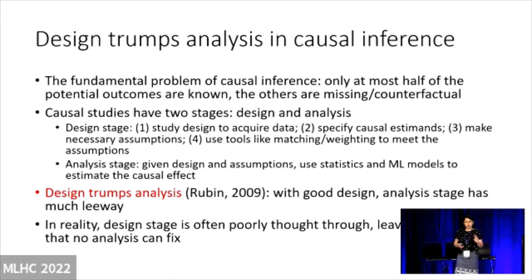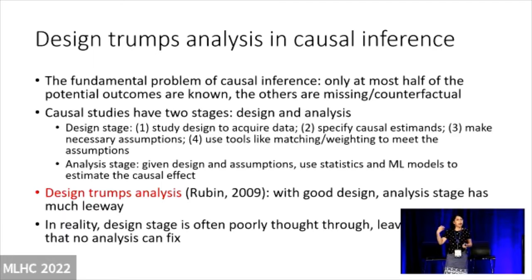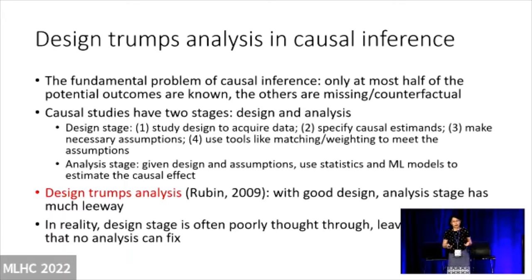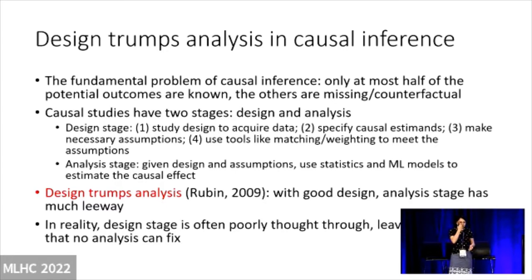In causal inference, we often say that causal studies have two stages. The first stage is called design and the second is called analysis. Broadly speaking, the design stage is: first, you come up with a design to acquire data; second, you specify the so-called causal estimand — basically the target of your estimation; third, you make the necessary assumptions. Remember — the fundamental problem of causal inference is that you can observe at most half of the counterfactuals. So in order to do that, you have to make assumptions. Then you use tools like matching, weighting, whatever, to make the data meet those assumptions.